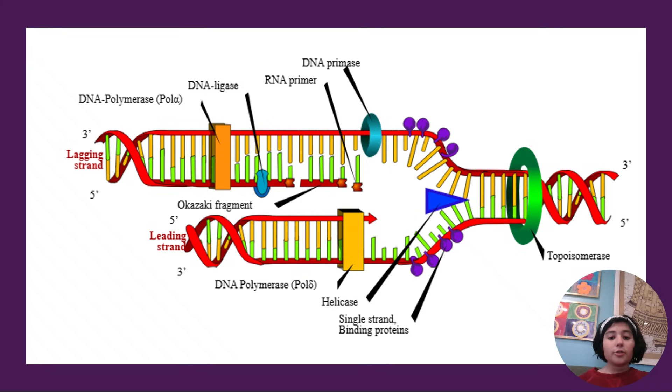So this base here is being read from 3 prime to 5 prime, and this new strand over here is being made from 5 prime to 3 prime. So it goes as planned because it's going to keep adding on the 3 prime end. So it's going to keep adding on this end, which is what we want. So that's why this is called the leading strand.